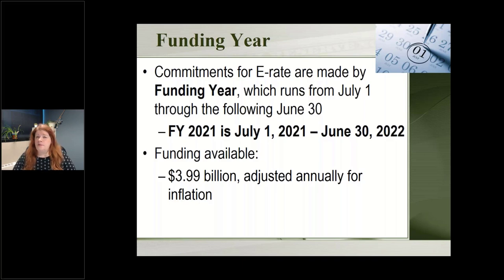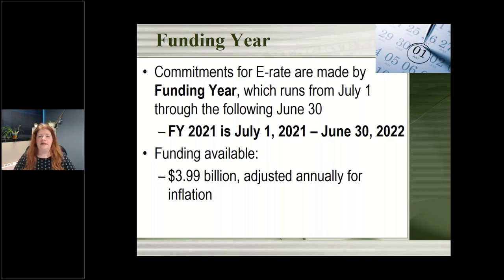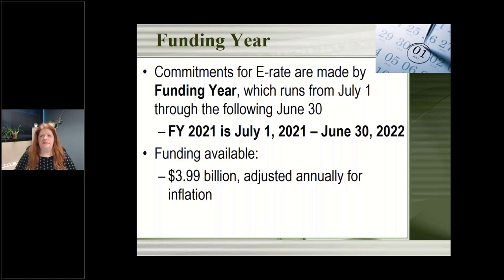There's almost $4 billion available in this pot of money that we all put into, so there is a lot of money out there for everyone to use. Unless you make some major mistakes on your applications, almost everybody is approved for what they're asking for. Sometimes there are tweaks depending on eligibility, but there is a lot of funding out there for our schools and libraries.